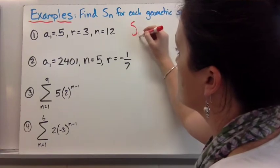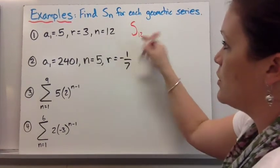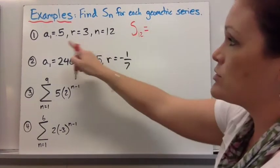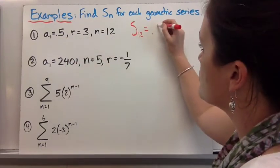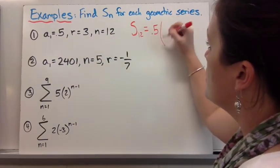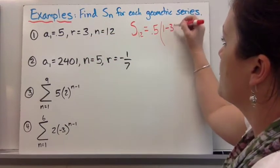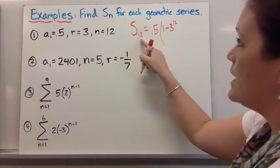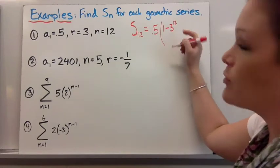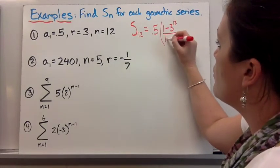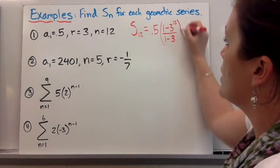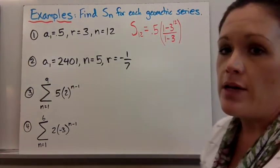I know I'm finding the sum of n terms, which is 12. I can set that equal to my first term, which was 5. Then I have 1 minus r, which is 3, to the 12th power, because that n is the same as that n in my formula, all divided by 1 minus r, which is 3.